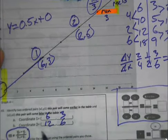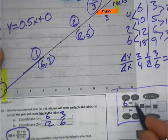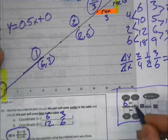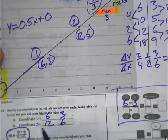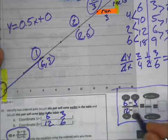Y2. Well, go to coordinate two. What's the value of Y? 6. Y1. Go to coordinate one. What's the value of Y? 3. X2. Go to coordinate two. What's the value of X? 12. X1. Go to coordinate one. What's the value of X? 6. Now all you got to do is subtract. 6 minus 3 is 3. 12 minus 6 is 6.